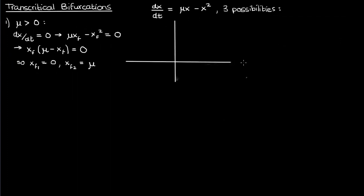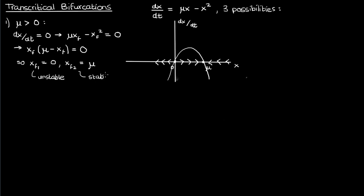You can also verify this by drawing the phase portrait — plotting dx/dt as a function of x. The phase portrait crosses the x-axis at two points, x equals zero and x equals μ, confirming our calculation. When μ is positive, the fixed point at zero is unstable since the flows are diverging from it, while the fixed point at μ is stable since the flows are converging towards it.